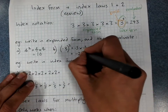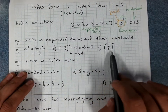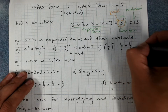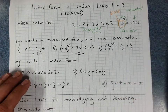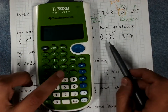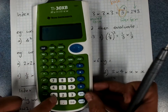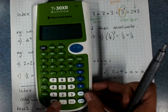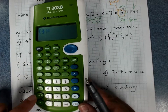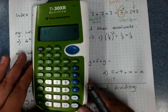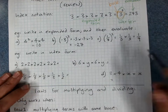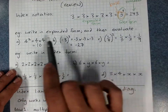It's a really good idea to use your calculator to evaluate. For example, 1 third to the power 2 means 1 third × 1 third — we can use index notation with fractions as well. On the calculator, use brackets: open bracket, enter 1 third as a fraction, close bracket, to the power 2, and you get 1 over 9. Make sure you can use your calculator to evaluate from a power and write in expanded form.